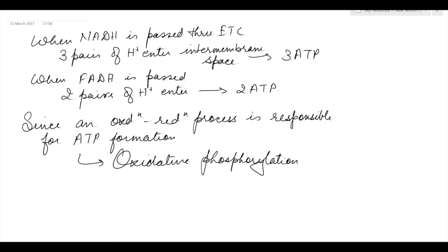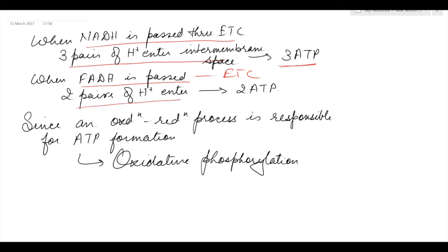When NADH is passed through the electron transport chain, three pairs of protons enter the intermembrane space, resulting in 3 ATP. When FADH2 is passed through the electron transport chain, two pairs of protons enter the intermembrane space, resulting in 2 ATP. Since an oxidation-reduction process is responsible for the formation of ATP, this electron transport chain is also referred to as oxidative phosphorylation.